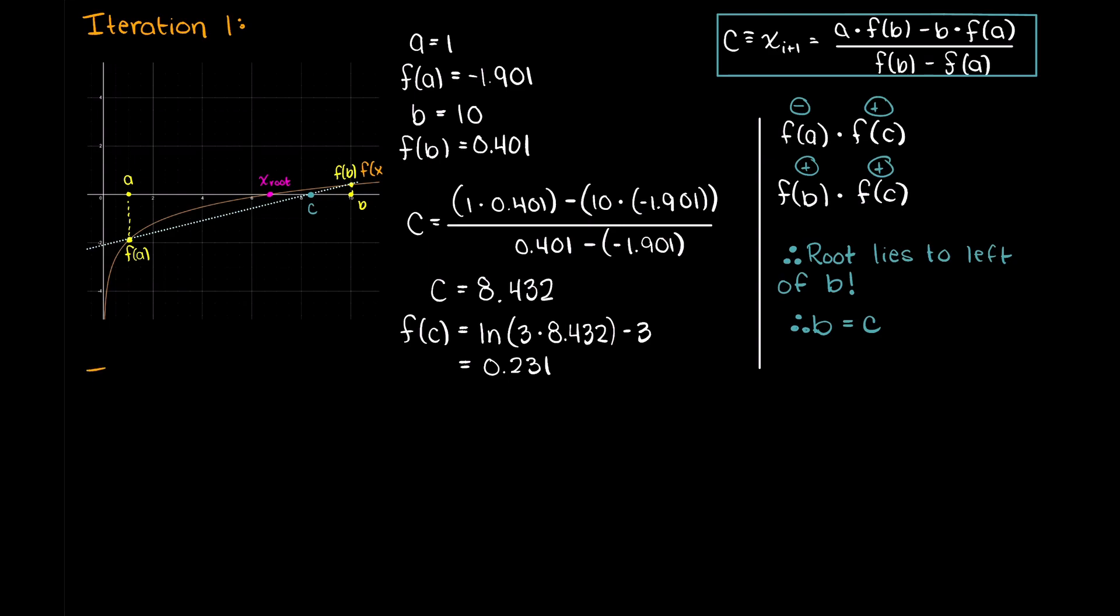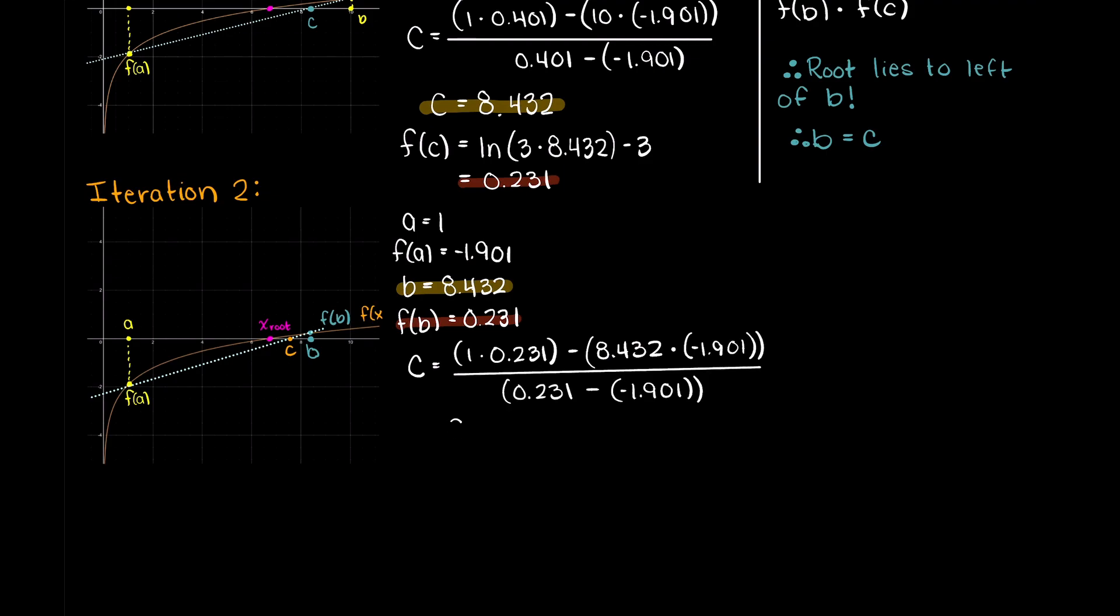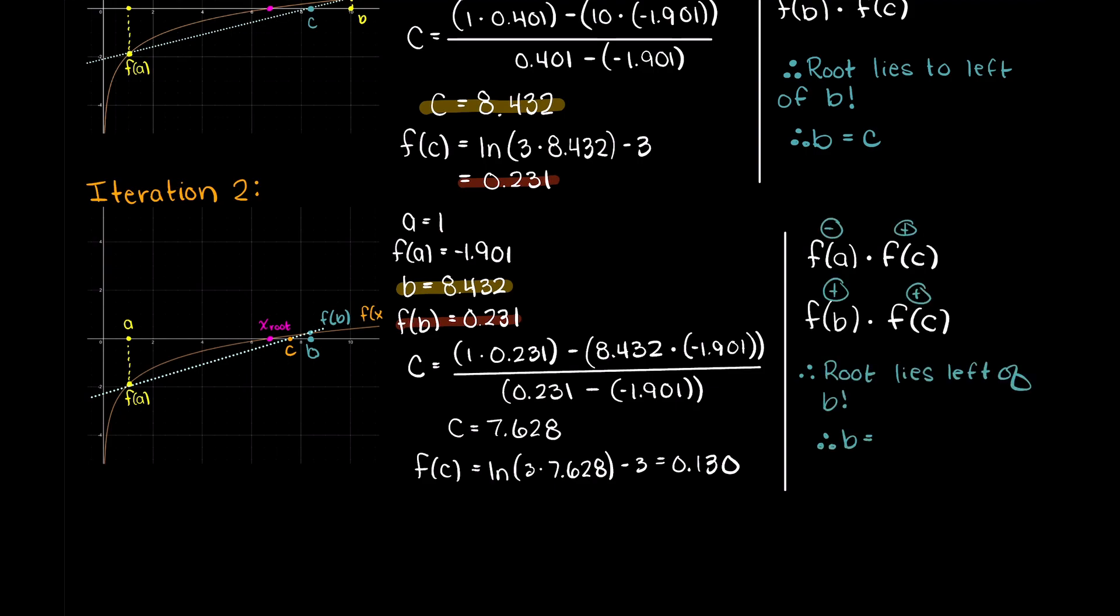Moving on to iteration 2, we can just repeat the process of iteration 1. A is going to remain the same as we do not need to change anything about it. As we said, b is now our past iteration c value. We can now solve for c here which works out to 7.628. Plugging this into our function, we get an output of 0.13. And again from our root test, we determine that this c value will again become our new upper root boundary and replace b.